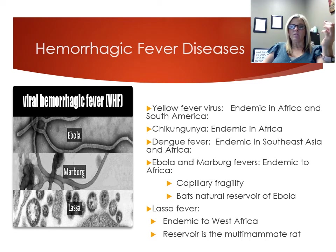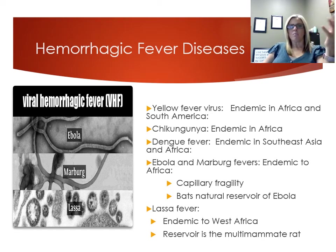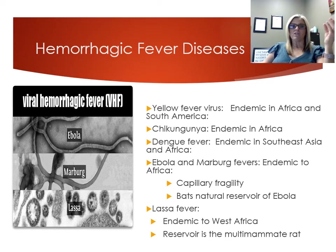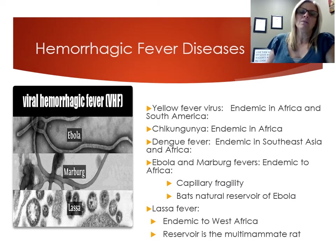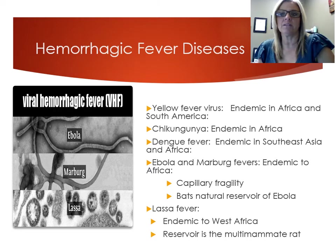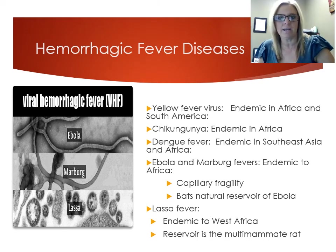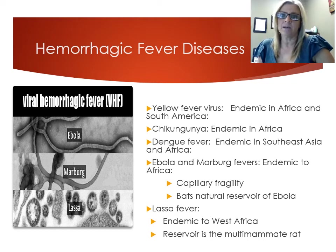Yellow fever is spread by the Aedes mosquito, found in Africa and South America, more frequent in rainy climates, and accompanied by jaundice — hence the word 'yellow.' Chikungunya is endemic to Africa, appeared in Central America in 2013 and Europe in 2014, going from zero to 1.7 million cases in three years; it's also spread by the Aedes mosquito and causes arthritic symptoms. Dengue fever, found in Southwest Asia, Africa, and parts of the Americas, is also spread by Aedes mosquitoes and was historically called 'break bone fever' because of the severe pain it causes.